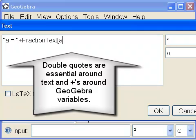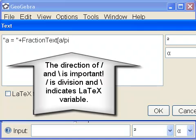Fraction text is a GeoGebra variable, so has pluses. Remember the direction of slashes is important. A forward slash means divisions. We have a divided by pi, and a backward slash indicates a LaTeX variable.